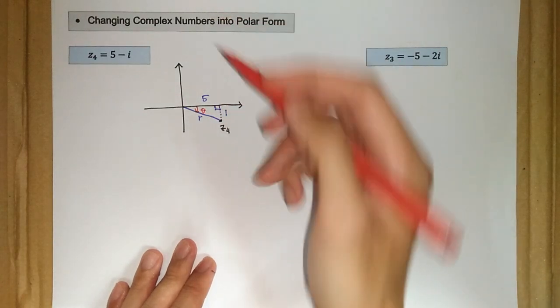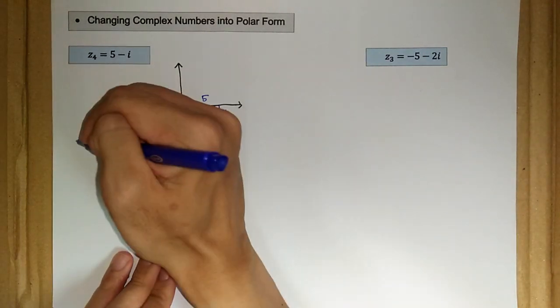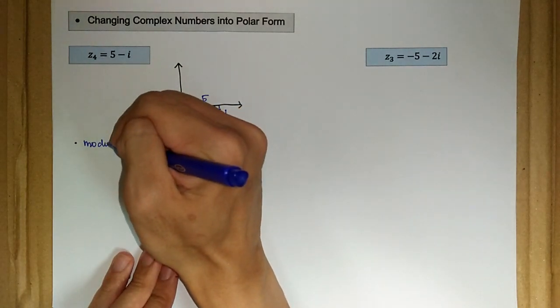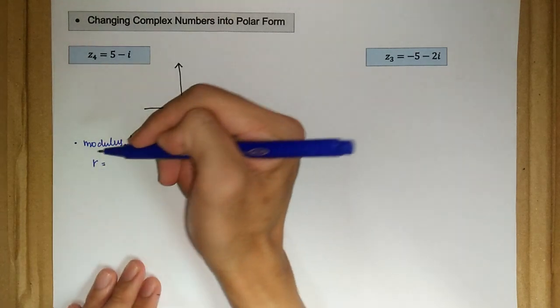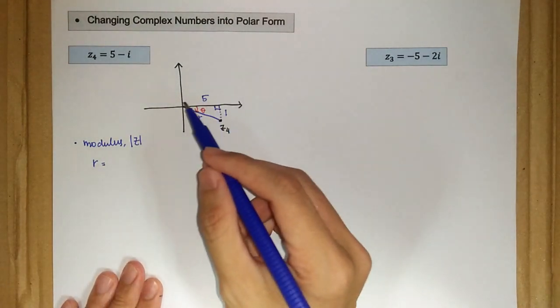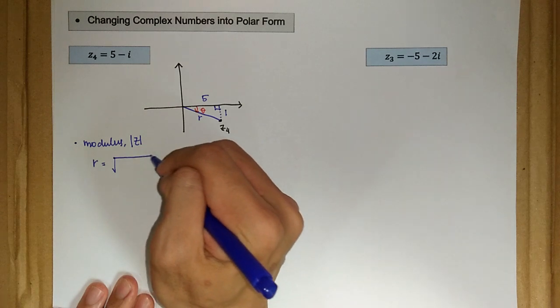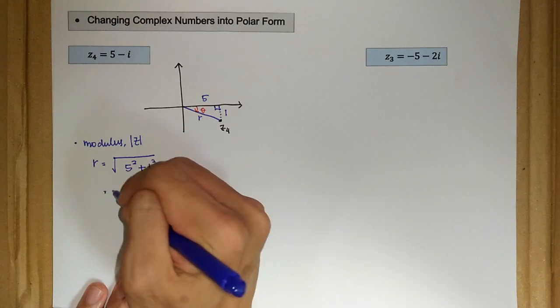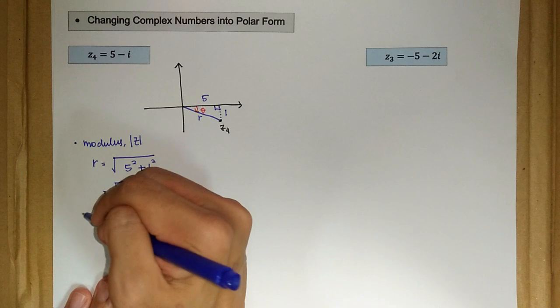So this is our theta or our angle argument here. So let's find the modulus first, the simplest one. So modulus r is just, we apply the Pythagorean theorem here. We have square root of 5 squared plus 1 squared, so we have square root of 26.